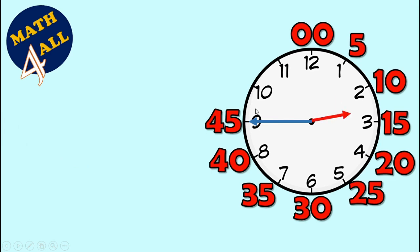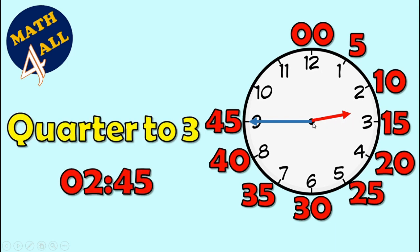What is the time here? The long hand is on 9 and the short hand is between 2 and 3, it means we didn't reach 3 yet. We have only quarter of an hour left to reach 3, so it's quarter to 3, or it's 2 and 45 minutes.